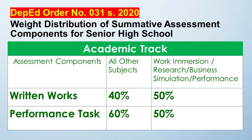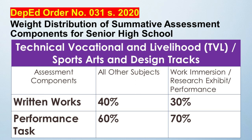For Work Immersion, Research, and Business Simulation and Performance: Written Works is 50% and Performance Tasks is 50%. For Senior High School Technical-Vocational and Livelihood (TVL), or Sports, Arts and Design: all other subjects have Written Works at 40% and Performance Tasks at 60%. For Work Immersion, Research, Exhibit, and Performance under TVL: Written Works is 30% and Performance Tasks is 70%.